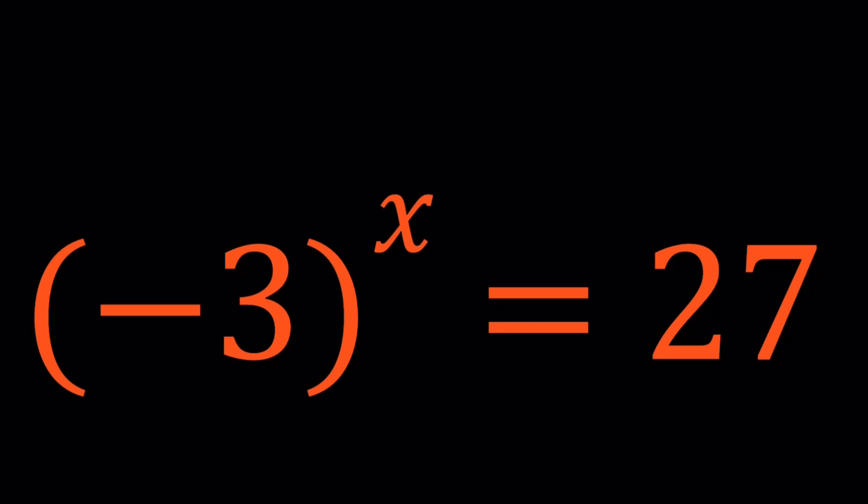Because when you look at a problem like this, you're probably thinking if x is even, then I can get a positive answer from a negative base, right? But would you raise negative 3 to 2 to get 27? Now, I'm thinking about 3 to the third power is 27, but my base is negative 3. So can I still get positive 27? What is going to happen in this case?